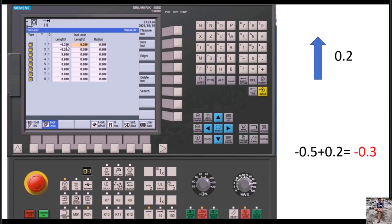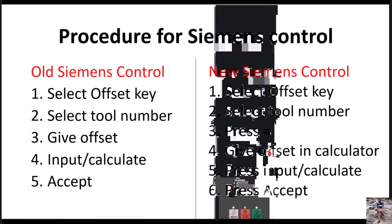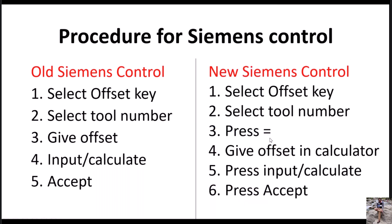New Siemens control: the calculation is done automatically. First press the offset key, then select the tool number, then press the calculator key on the Siemens control panel — a calculator will appear on screen with the previously stored offset value displayed. Now add the new offset value: for example, if the existing offset is minus 0.5 and you want to add plus 0.2, enter plus 0.2 in the calculator, press input or calculate, and the CNC machine will automatically compute the new offset value. Finally press accept. That's the key difference: in old Siemens you manually calculate, in new Siemens the machine calculates for you.